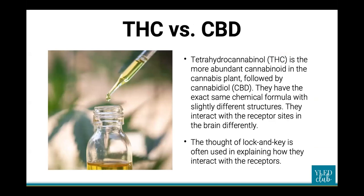The thought of a lock and key is often used to explain how they interact with the different receptors. The THC key fits into the CB1 receptor lock and turns it on, which triggers a response that stops the release of other neurotransmitters, thereby protecting the brain from too much excitation.